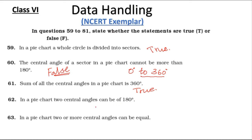Question 62: In a pie chart, two central angles can be 180 degrees — this can also be true. Question 63: In a pie chart, two or more central angles can be equal — this is also true, as you can have equal sectors.